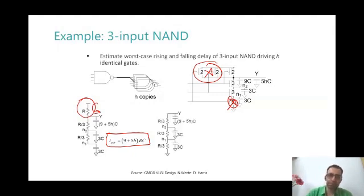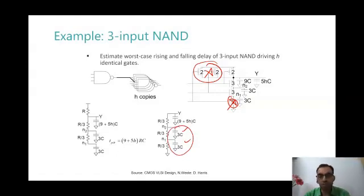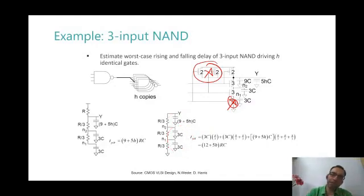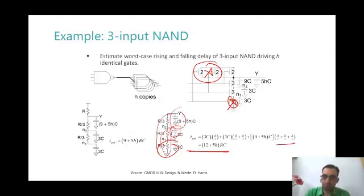Now what about the falling delay? So falling delay I have these two capacitors also into picture which need to be discharged before the output gets discharged. We will apply the Elmore's delay equation and we will see that the falling delay is 12 plus 5HRC. What did I do? I simply set this 3C from R by 3. Then this 3C from 2R by 3. Then this from R. You see? So answer I get is 12 plus 5HRC. So one thing that is evident is that in a NAND gate even if I have sized it equivalent to a regular inverter the rise and fall delays will not be equal. The rise the propagation delays for rise and fall will not be equal. Are you able to see this?